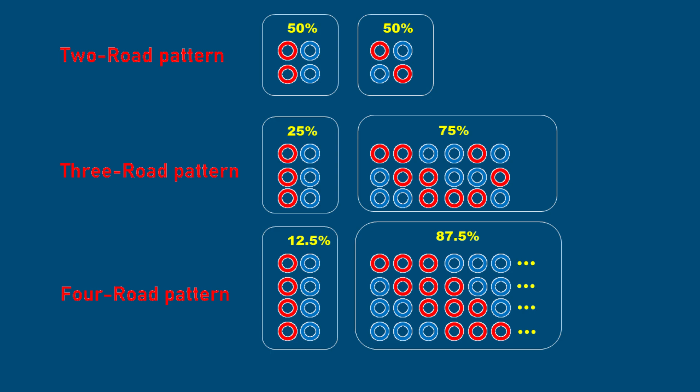Next is the three-road pattern, where three consecutive rounds are considered. There are eight possible outcomes. In this case, the probability of consecutive wins drops to 25%, while the probability of mixed outcomes rises to 75%. This pattern reveals an interesting shift: as the number of rounds increases, the likelihood of long streaks decreases, and irregular outcomes become more common.